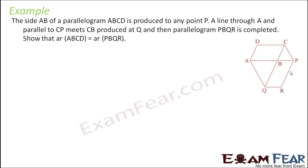Besides AB, we draw a parallel line to A and parallel to CD. So CD is produced to Q and then parallel to PDR. PDR is also a parallelogram on their side, so we have to prove that area of ACD is equal to area of parallelogram PDR.